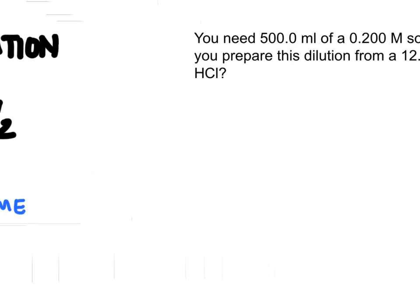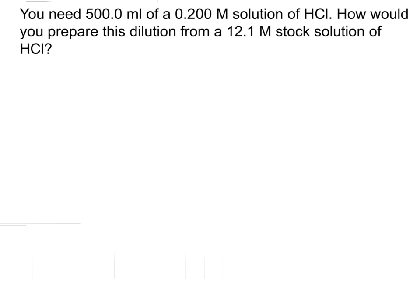Let's try using this equation to figure out how to dilute something. This problem says you need 500 milliliters of a 0.200 M solution of HCl. How would you prepare this dilution from a 12.1 M stock solution?